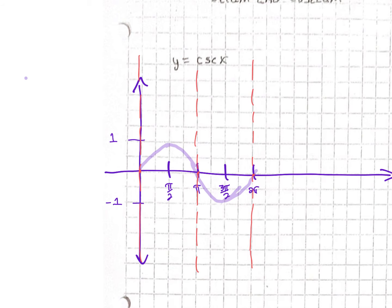Think about the y value at pi over 2 — it's 1, and if we take the reciprocal of 1, we just get 1. At 3 pi over 2, it's negative 1, and if we take the reciprocal of that, we also get negative 1. So those are key critical points that we are going to draw in.